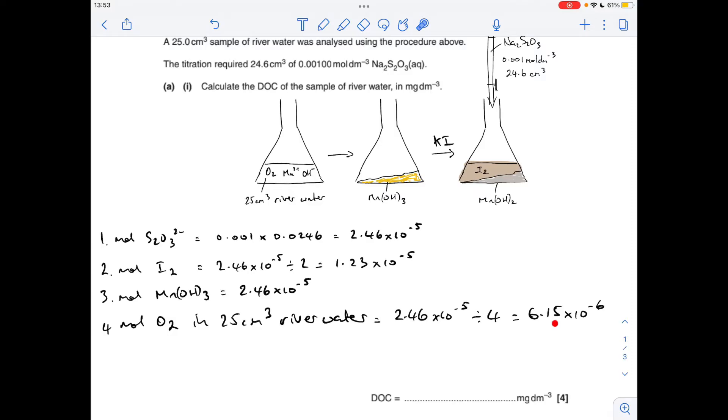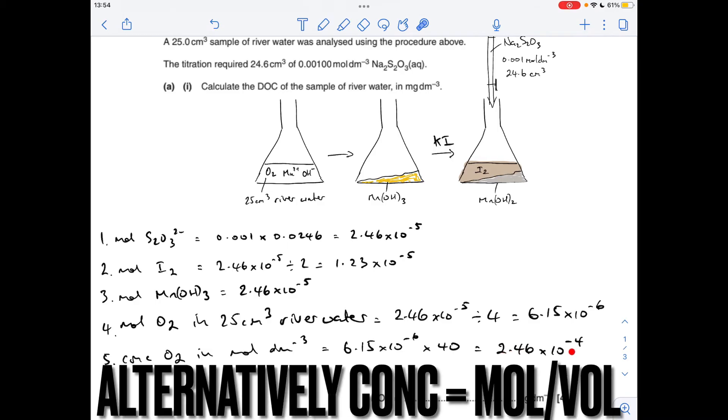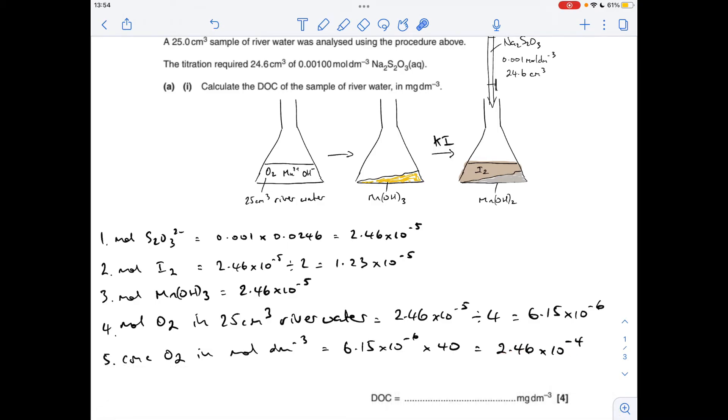So that's going to be a quarter of the moles of Mn(OH)₃, so that's coming out at 6.15 times 10 to the minus 6. Next thing I've done is worked out the concentration of oxygen in moles per decimeter cubed, so we know that there's that many moles in 25 cm³, so a decimeter cubed is 40 times that volume. Then I just need to multiply by the MR of O₂ to get the grams per decimeter cubed, so that's coming out at 0.007872 grams per decimeter cubed. Multiply by 1,000, put it into milligrams, so our final answer is 7.872 milligrams per decimeter cubed.